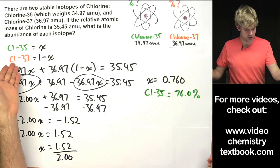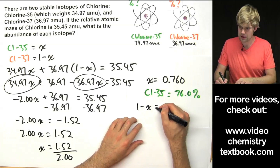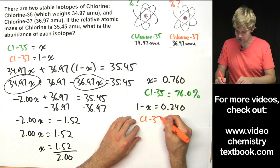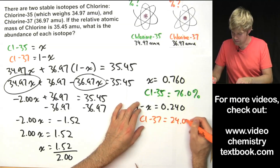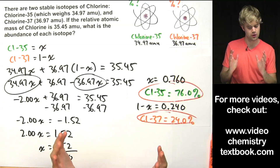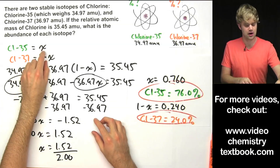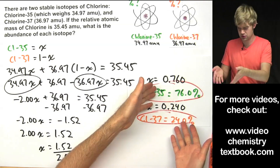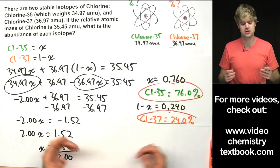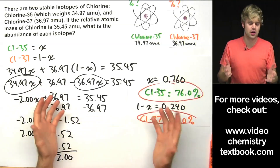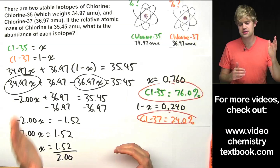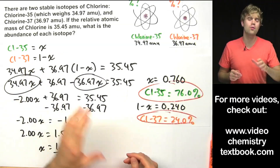Now for the other part: Cl-37 is 1 minus x, which turns out to be 0.240. Multiply by 100 to get the percent — Cl-37's percentage equals 24.0%. So those are the two percentages we were solving for. To review: the only really tricky thing is setting one isotope equal to x and the other to 1 minus x, because the two percentages must add up to 100% — or 1 when expressed as decimals. Now let's do one more problem quickly, step by step.